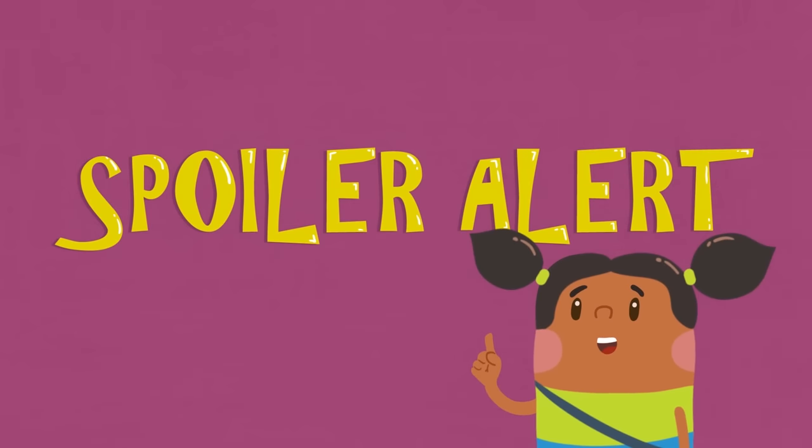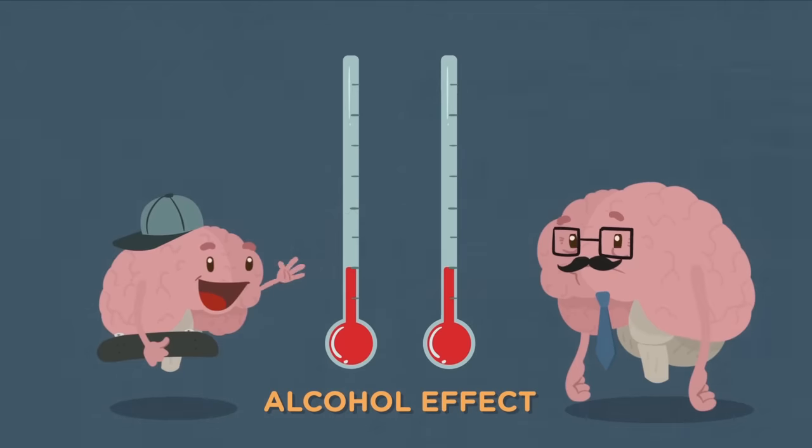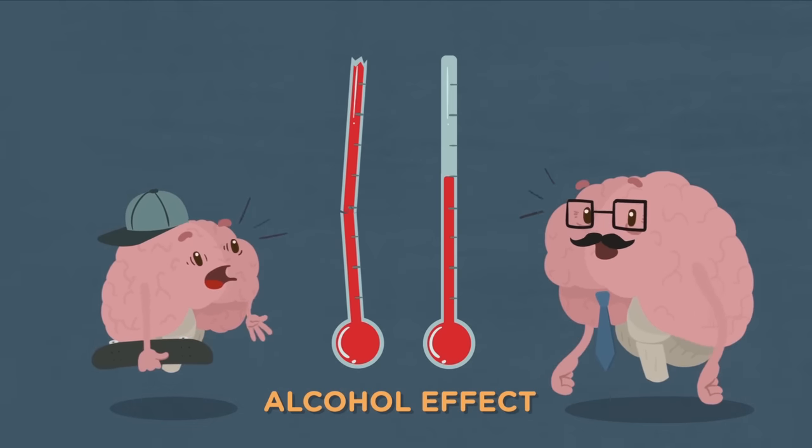Spoiler alert: these messengers play a key role in the way alcohol affects the brain, but we'll talk more about that in the next video. As a young person with a still-developing brain, alcohol can have a stronger effect on you than on adults. Learning the facts can help you make healthy decisions.